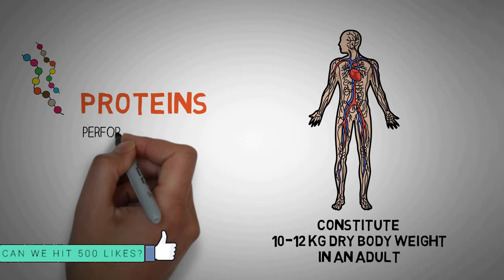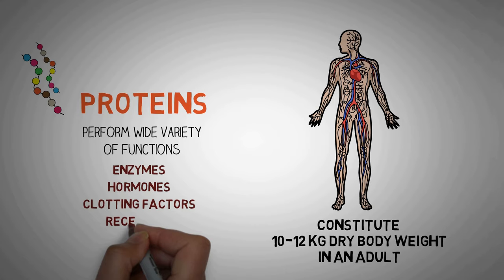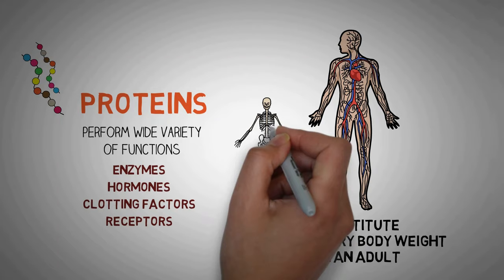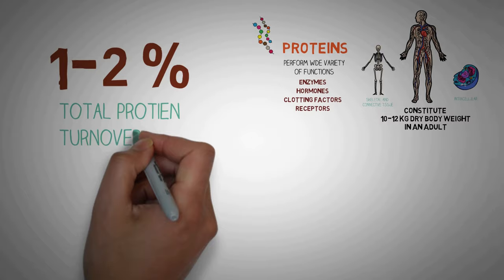They perform a wide variety of functions in our body. In almost every biological process, proteins are required. Enzymes, hormones, clotting factors, receptors, all are proteins. About half of the body protein is present in the skeleton and connective tissue while the other half is intracellular. Now, each day humans turn over 1-2% of their total body protein, principally the muscle protein.